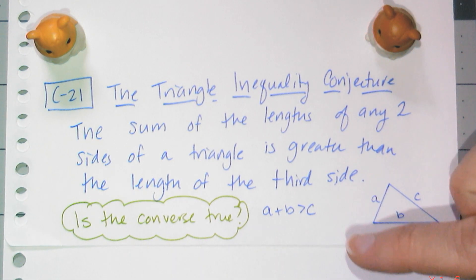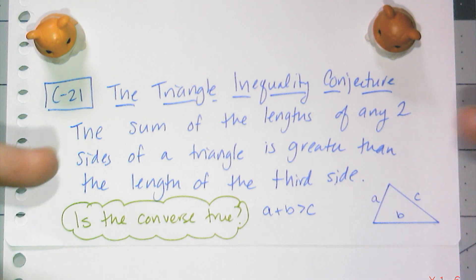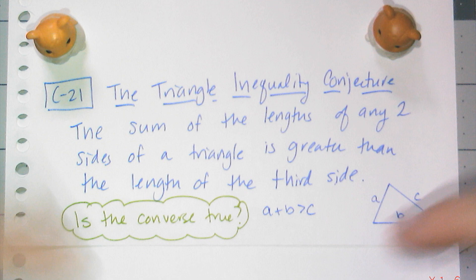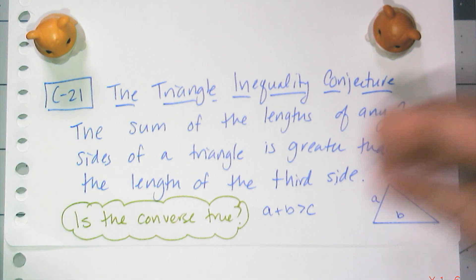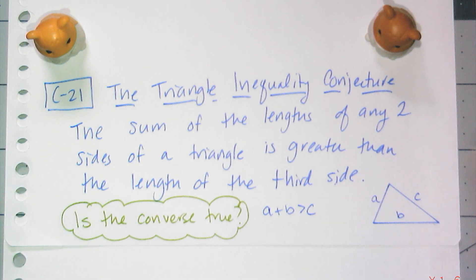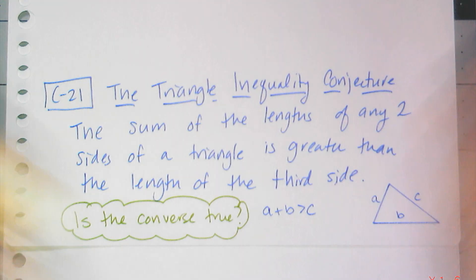Now the question is, is the converse true? And so that means if I have three numbers that meet these criteria, are they going to form a triangle? And the answer is, yes, the converse is true.